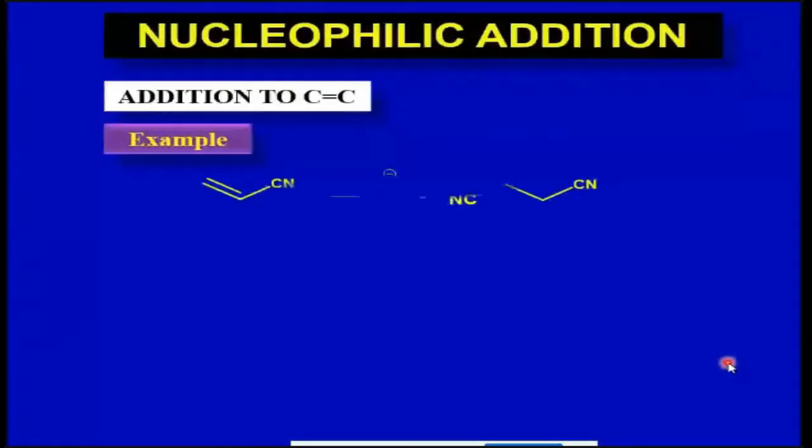So here are some examples. A simple molecule - you can see this double bond is substituted with a nitrile group.